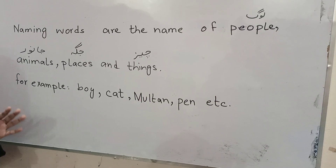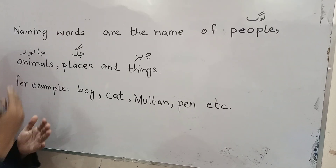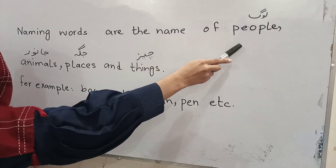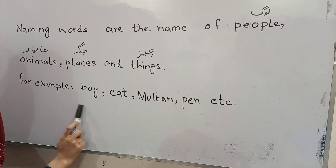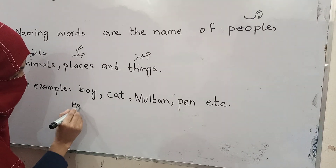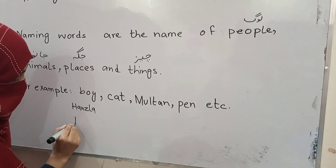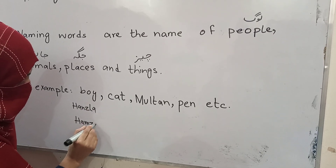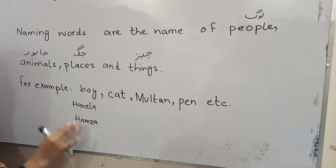Naming words — kisih bhi chiz ka name. Jaisi yaha pe humne use kiya people ke liye, logon ke liye — boy. Usmei Hamza aasapta hai, yeh sab boys ke name hain.